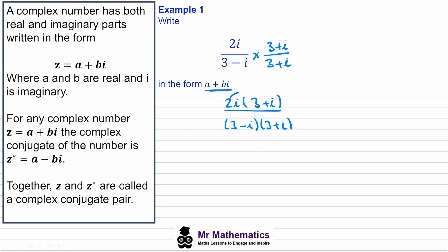Expanding the numerator gives us 6i and then 2i squared. The denominator expands to 9 plus 3i minus 3i and then minus i squared.